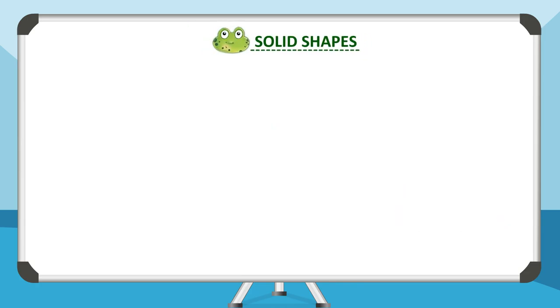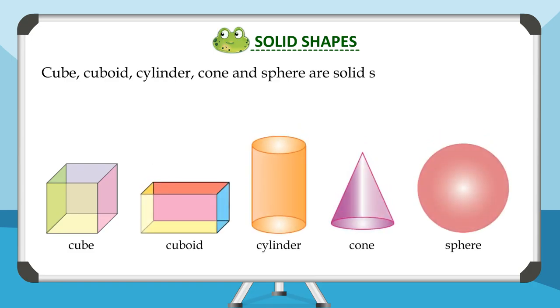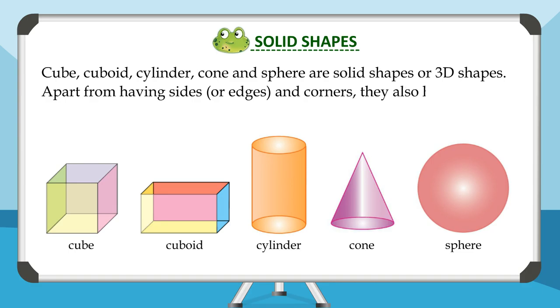Solid shapes. Cube, cuboid, cylinder, cone, and sphere are solid shapes or 3D shapes. Apart from having sides or edges and corners, they also have flat surfaces known as faces.